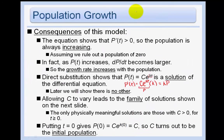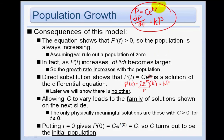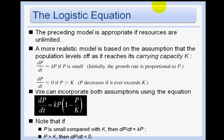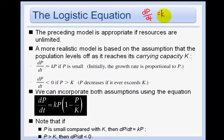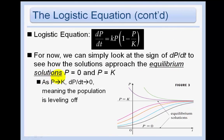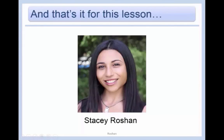To summarize this section: population can be modeled by ce^(kt), and population growth rate can be modeled by dp/dt = kp. Also remember the logistic equation: dp/dt = kp(1 - p/K) — this is logistic growth. Equilibrium solutions mean the derivative equals 0, where the function is flattening out. Those are the main things to take away from this section.